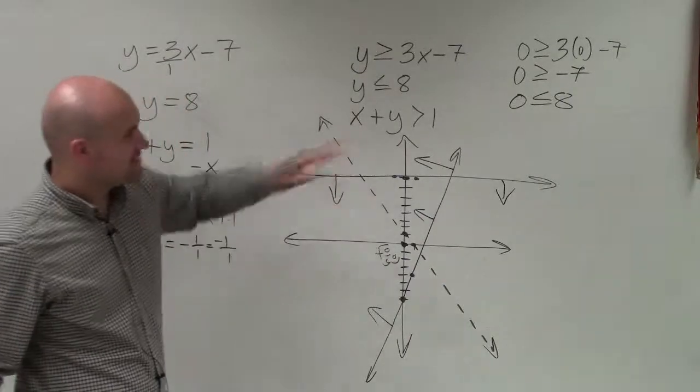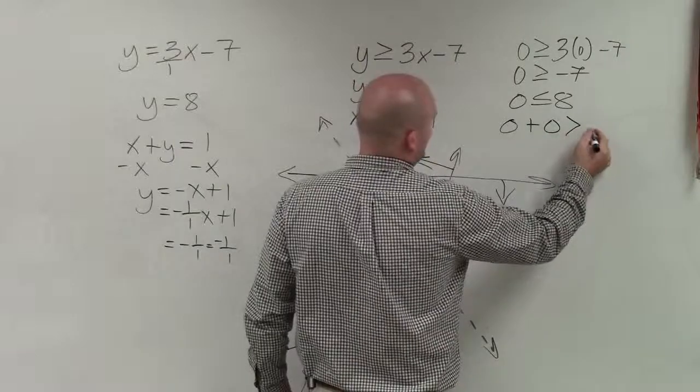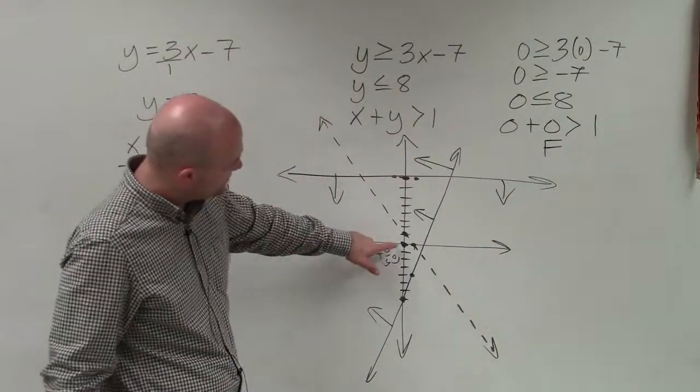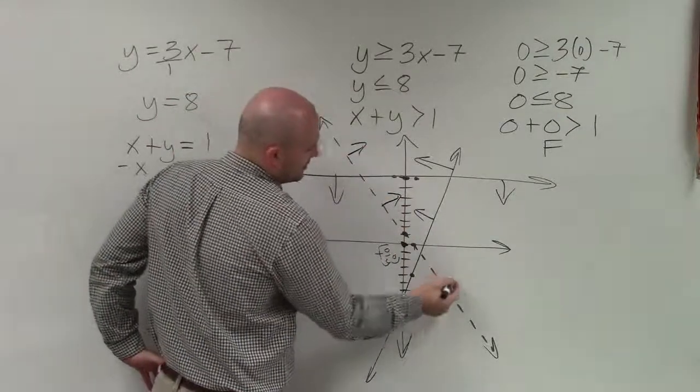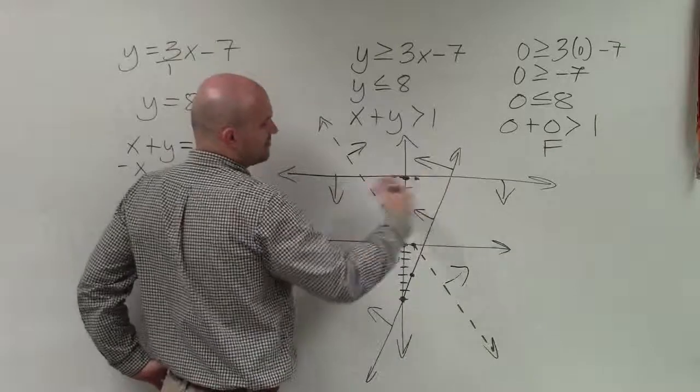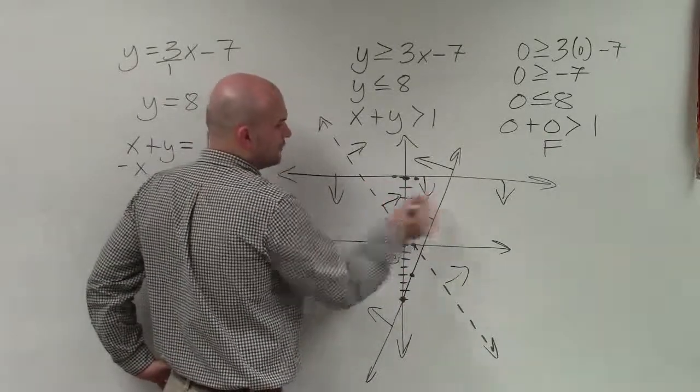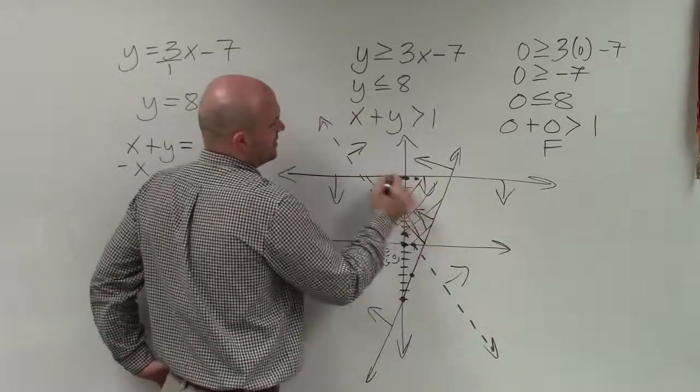And then on the last one, that is this boundary line. I'll do 0 plus 0 is greater than 1. And that is false. So for this boundary line, you could see that it is false. So therefore, I am going to be shading above the line. So therefore, when you complete all the shading, you'll see that the only region that all of my inequalities are true for is this nice region right here.